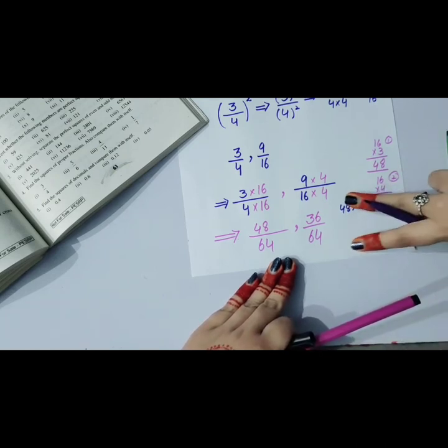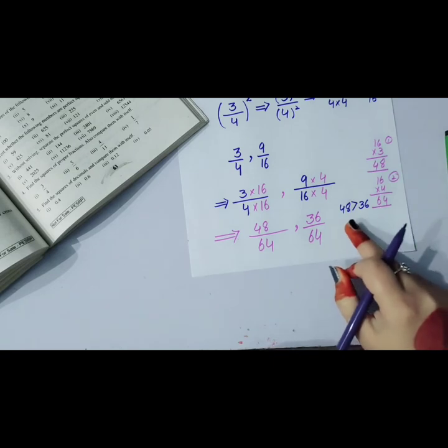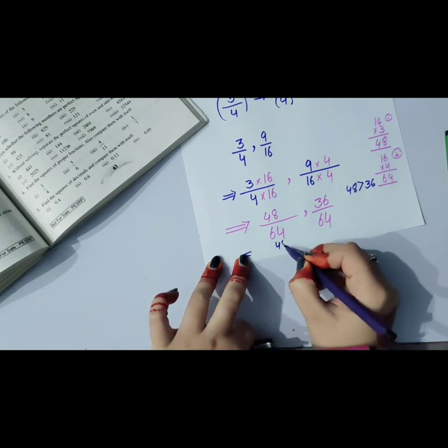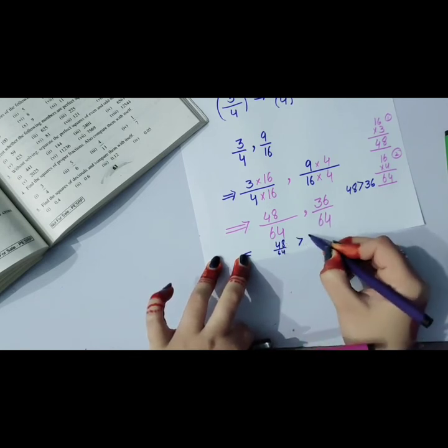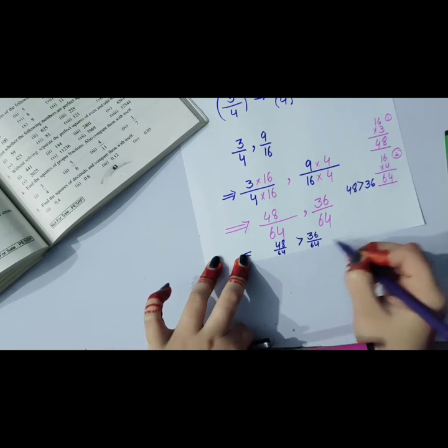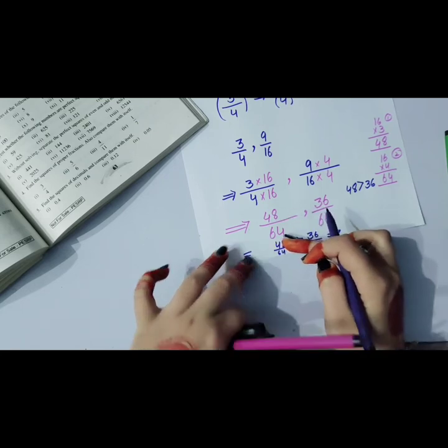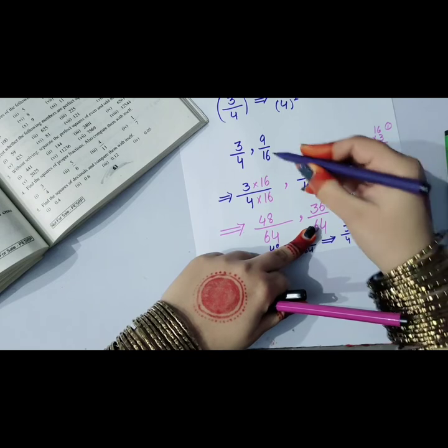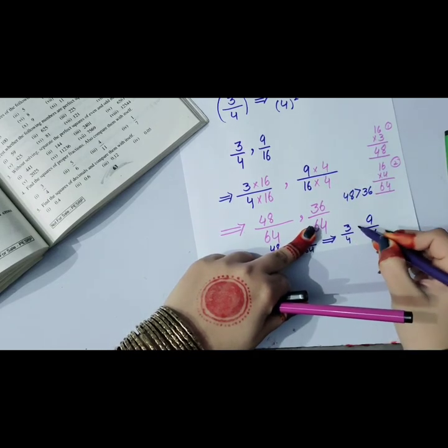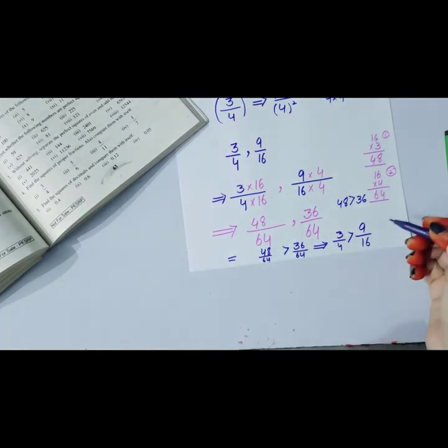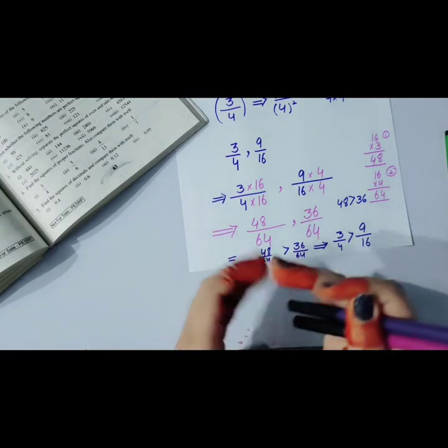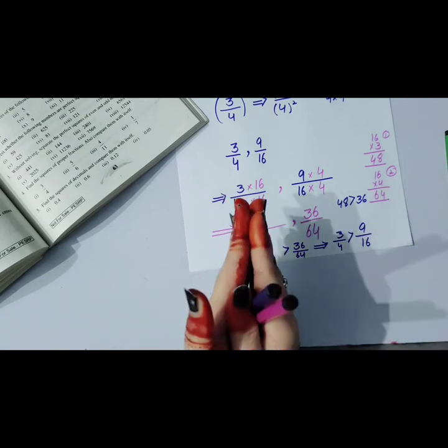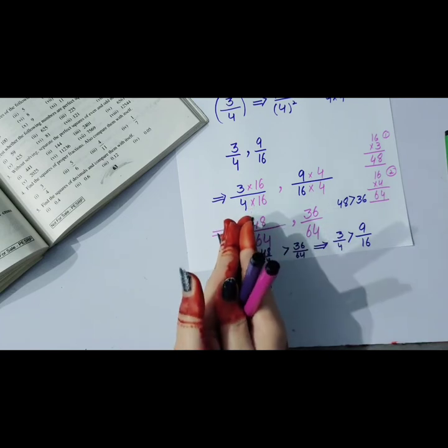48 is greater than 36, so we write 48 by 64 is greater than 36 by 64. This means 3 by 4 is greater than 9 by 16. Remember, when we find the square of a fraction, the fraction is greater than its square.